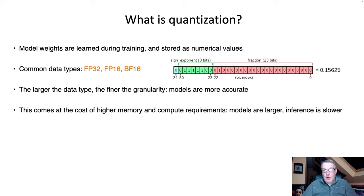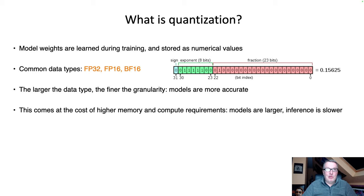Nothing's free, as we know. The cost of this increased precision is we need more memory to store the model parameters. We also need more memory bandwidth to read and write those model weights from the GPU to the memory where they're stored — we covered this when discussing flash attention. And of course, the larger the models and the wider the parameters, the more compute we're going to need, and inference will be slower.